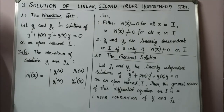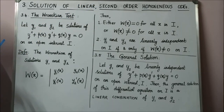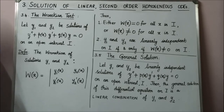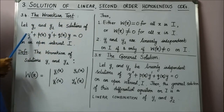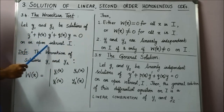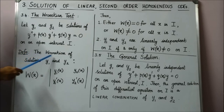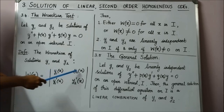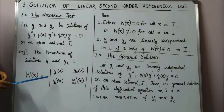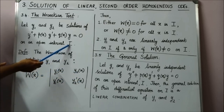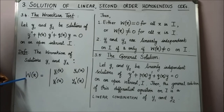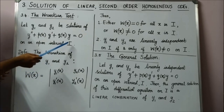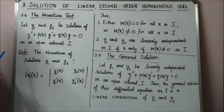Having talked about solutions to linear second order homogeneous equations for constant coefficient and Cauchy-Euler type, now it's time to speak about some general aspects. The first is the Wronskian test. If y1 and y2 are solutions to a general linear second order equation on the open interval I, then we define the Wronskian of y1 and y2 as W(x) equal to the determinant with entries y1, y2, y1', y2'. Since y1 and y2 are functions defined on I, the Wronskian is also a function of x defined on the same interval.